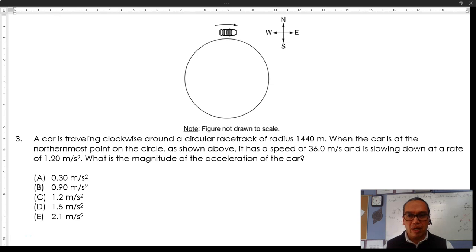Question 3. A car is traveling clockwise around a circular racetrack of radius 1,440 meters. When the car is at the northernmost point on the circle, as shown above,